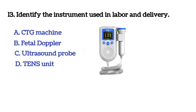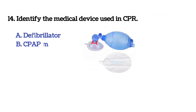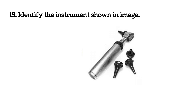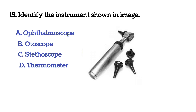Next question: identify the medical device used in CPR. Option A: defibrillator. Option B: CPAP machine. Option C: pulse oximeter. Option D: Ambu bag. The answer is option D, Ambu bag.